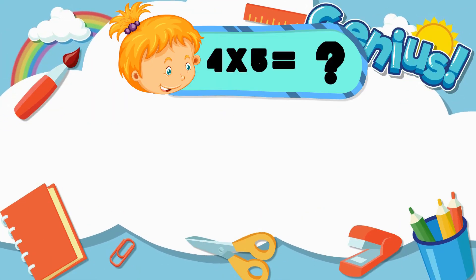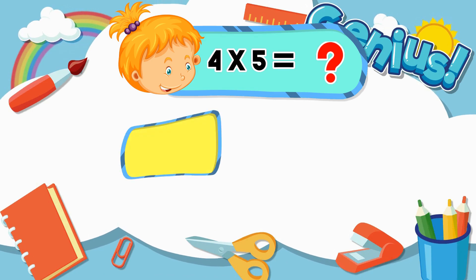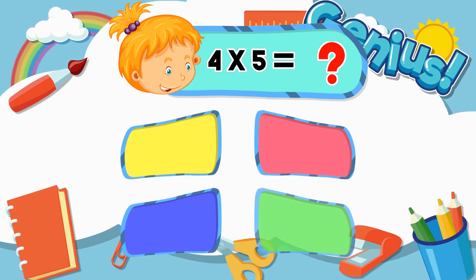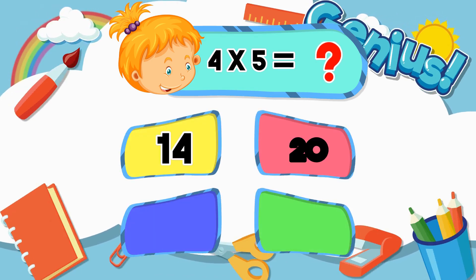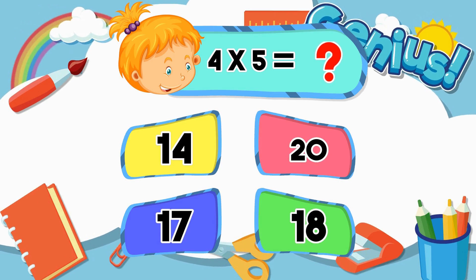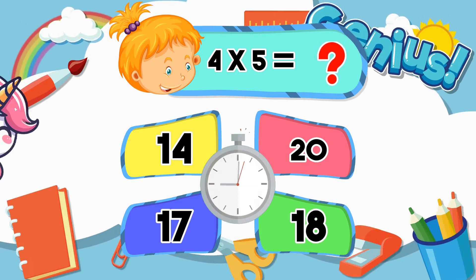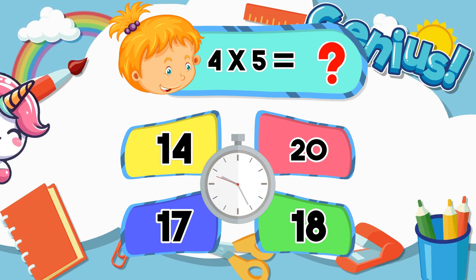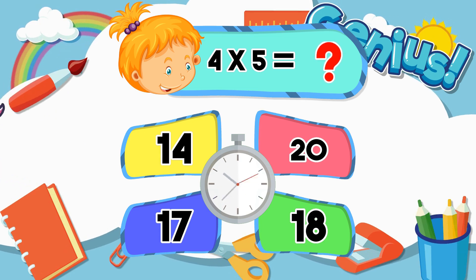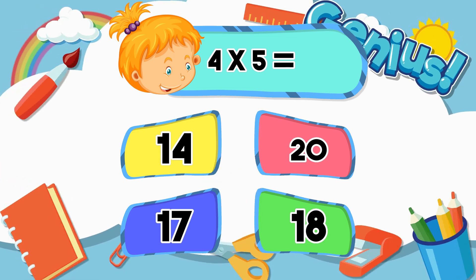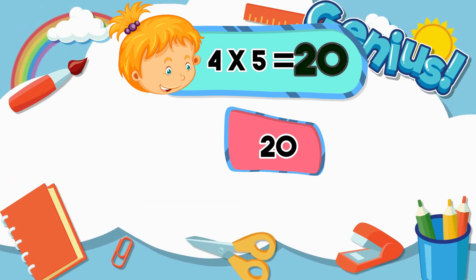What is 4 times 5? Options: 14, 20, 17, 18. Answer: 20.